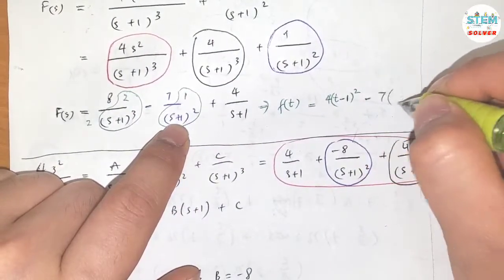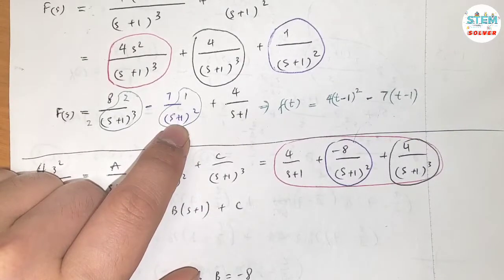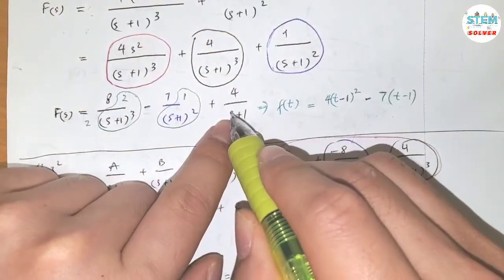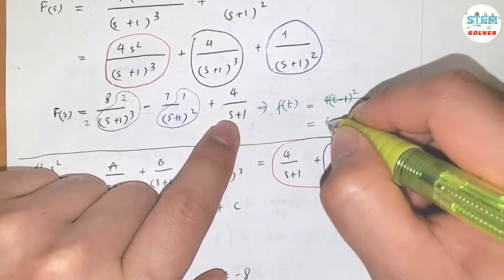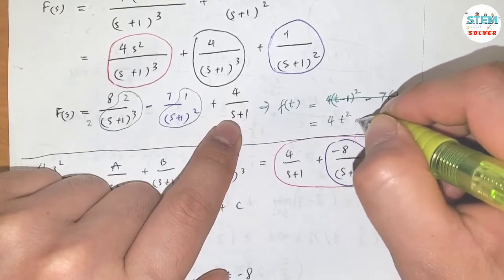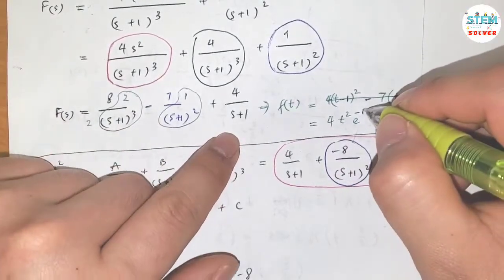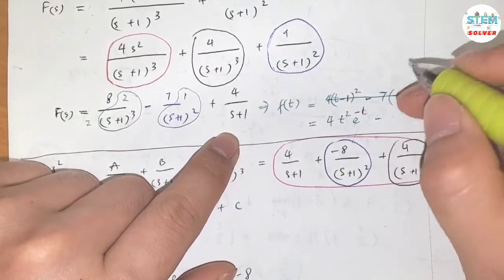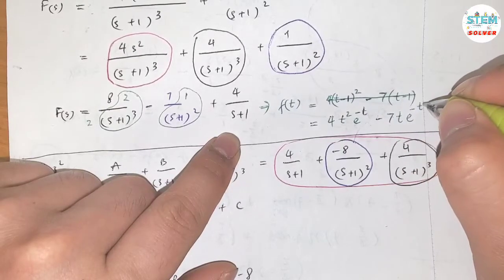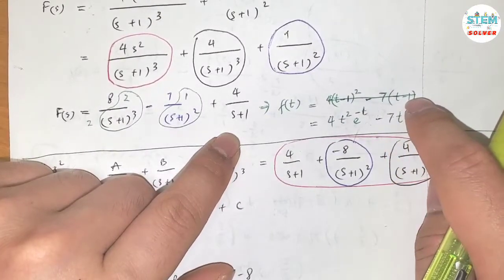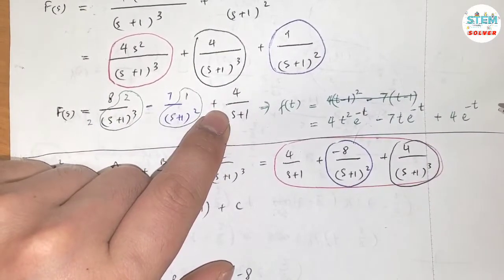Because of the shift, the t² becomes t² times e to the negative t. For the negative 7 over (s plus 1) squared term, the inverse gives negative 7t times e to the negative t. And for the 4 over (s plus 1) term, the inverse is 4 times e to the negative t.